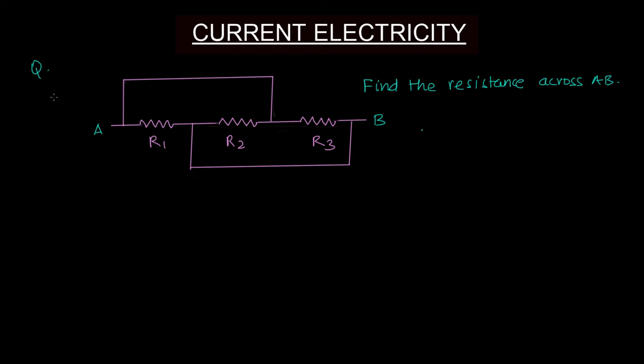There's a question like this where they ask you to find out the resistance across AB. The resistances are connected with wires that are of zero resistance. It's suddenly not apparent what the connection is - it's not series because the current keeps on getting divided in between.